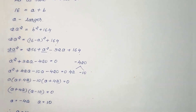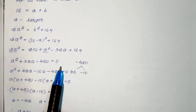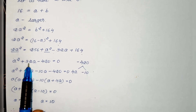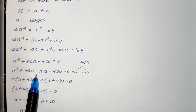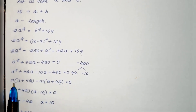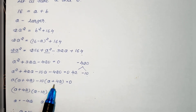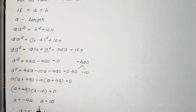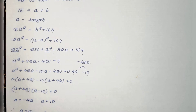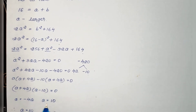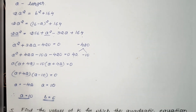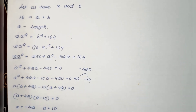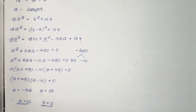Solving a² + 32a − 420 = 0 by splitting: factors of −420 are 42 and −10 (since their sum is 32). So a² + 42a − 10a − 420 = 0, giving a(a + 42) − 10(a + 42) = 0, so (a + 42)(a − 10) = 0. The values are a = −42 and a = 10. Since we need positive numbers, a = 10 and b = 16 − 10 = 6. The two numbers are 10 and 6.